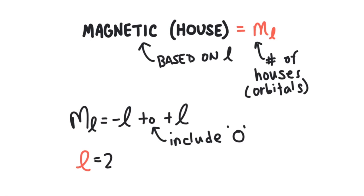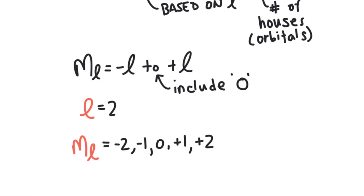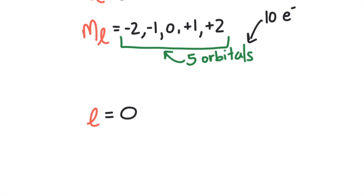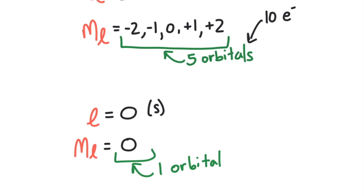M sub L takes all whole number integer values from negative L to positive L, including 0. For example, if L equals 2, the values of M sub L will be negative 2, negative 1, 0, positive 1, and positive 2 — meaning there are 5 orbitals on that sublevel. Each orbital can hold a maximum of 2 electrons, so 5 orbitals means up to 10 electrons total. If L equals 0, M sub L will just be 0, so there is only one orbital on an S sublevel.